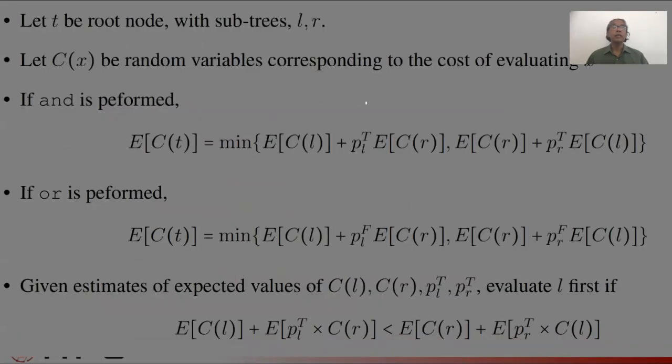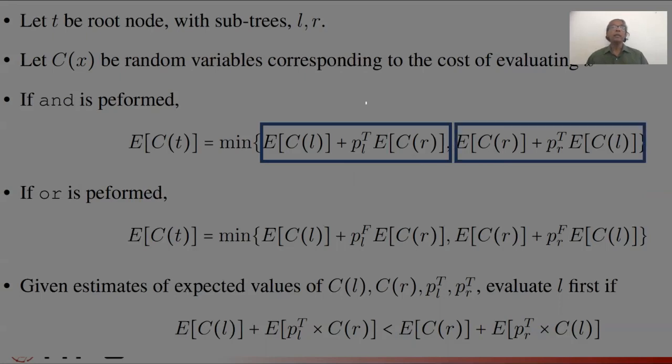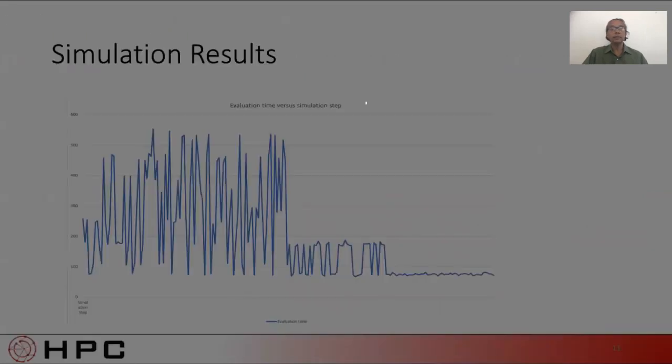Now, the proof that this strategy is in fact optimal has some interesting twists that are beyond the scope of this talk. But you can recognize the cost of going left versus the cost of going right. So we ran a simulation where we generated the structure of the tree, the outcomes, and the costs at random. The X axis shows the progress of the simulation. The Y axis shows the total cost of the tree evaluation.